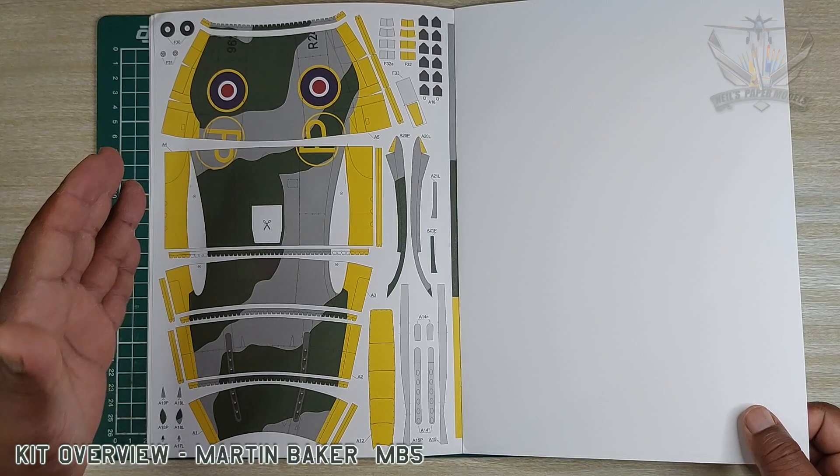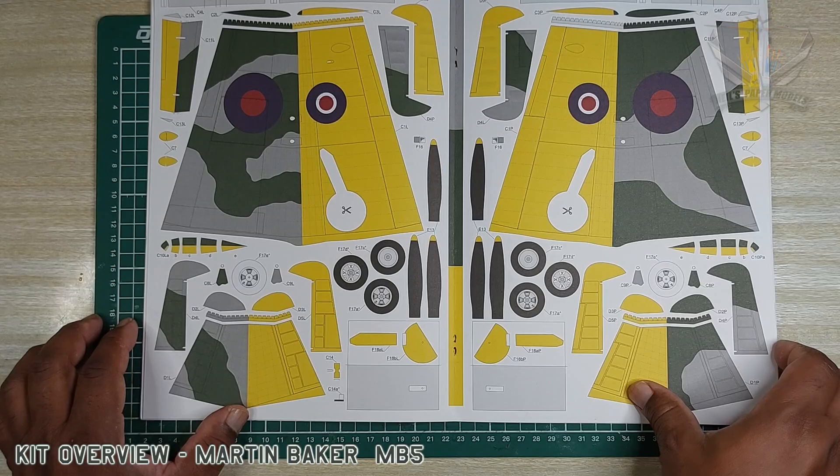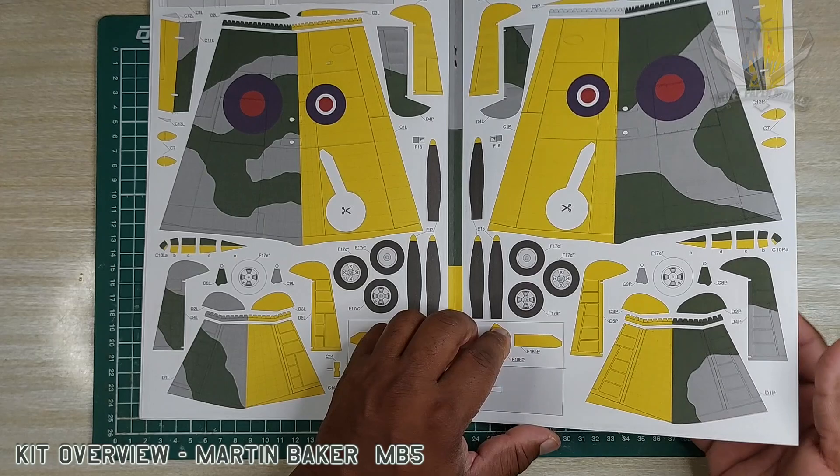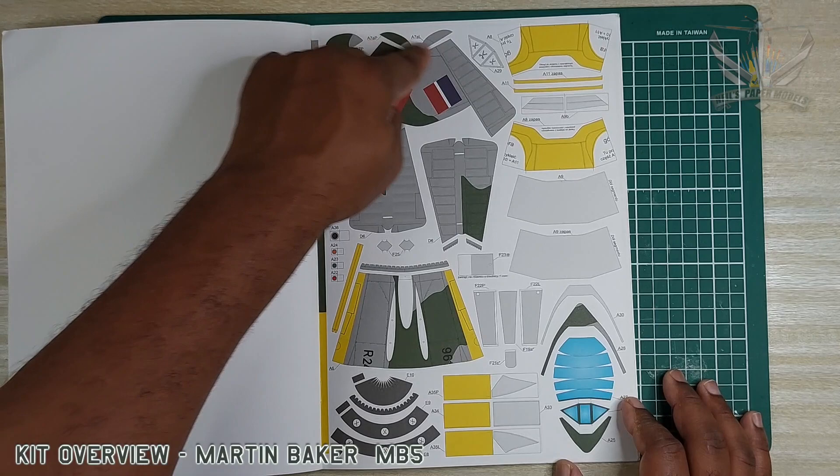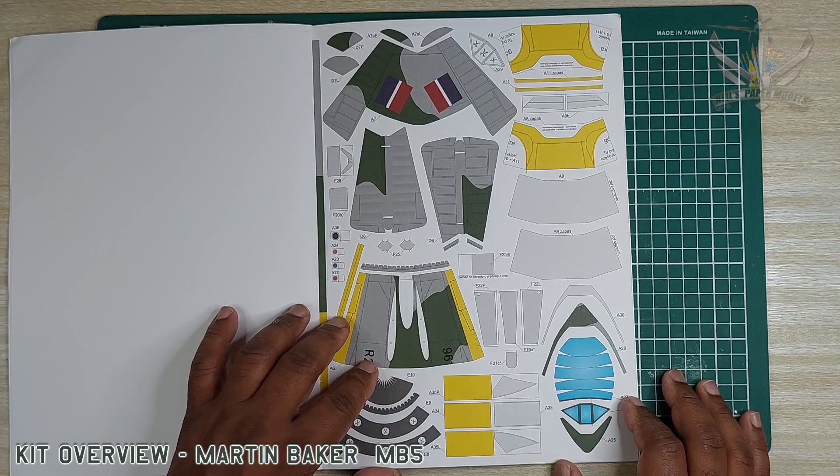But it does look nice. We have the main wing, we have the stabilizers. These look like Spitfire wheels, very interesting. Then we have, of course, the fin and rudder integrated.